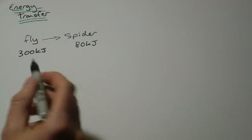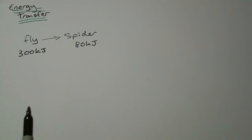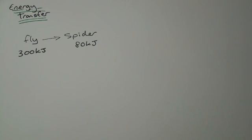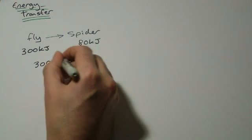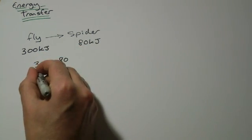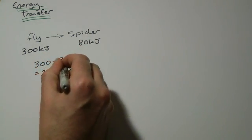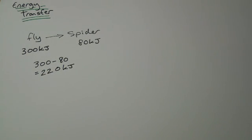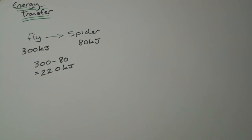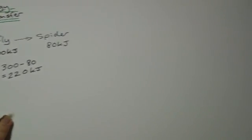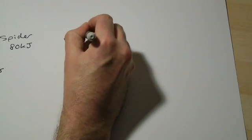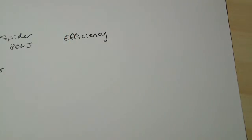You might be asked: how much energy has been lost in the transfer from the fly to the spider? This is straightforward — the answer is 300 minus 80, which equals 220 kilojoules. We'll come back to where that 220 kilojoules goes in a moment.